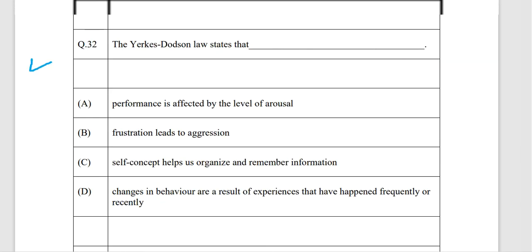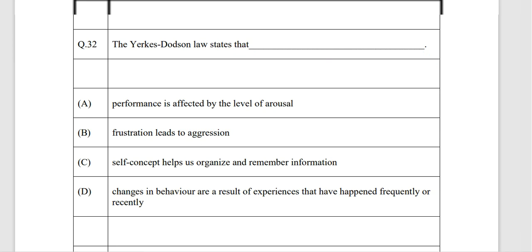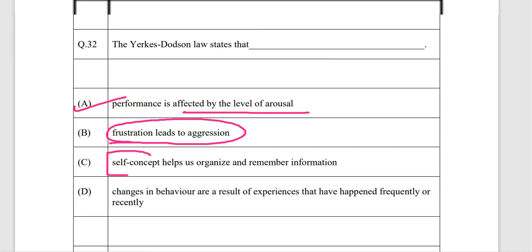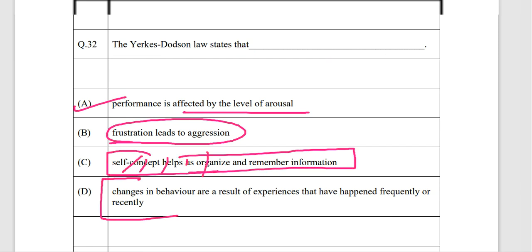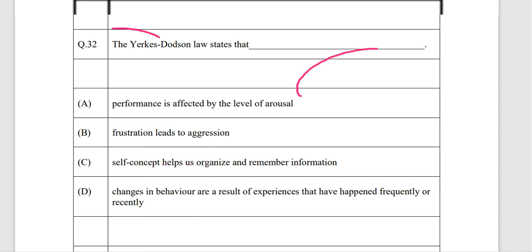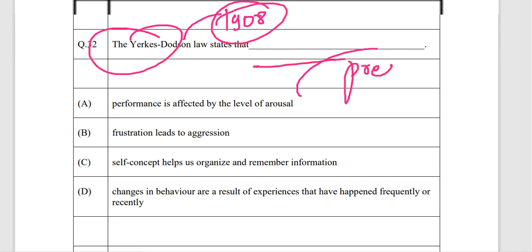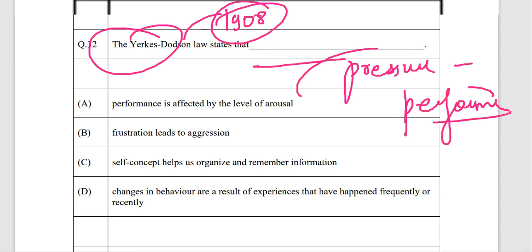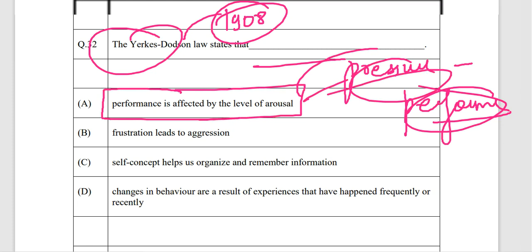The Yerkes-Dodson Law states that performance is affected by the level of arousal — option A is correct. The options include frustration leads to aggression, self-concept helps organize information, and changes in behavior result from frequent or recent experiences. The Yerkes-Dodson Law from 1908 describes the relationship between arousal and performance.